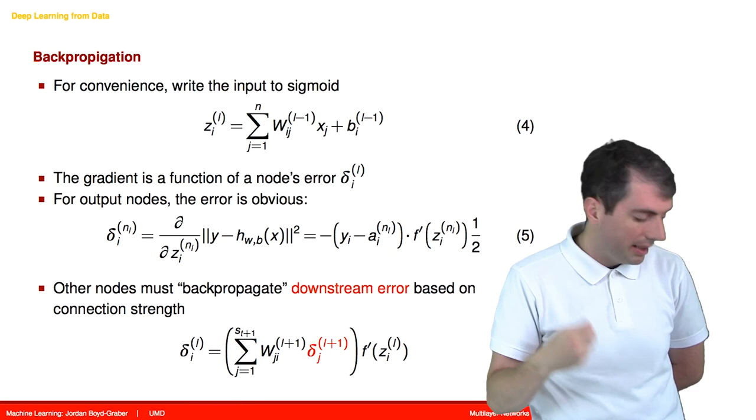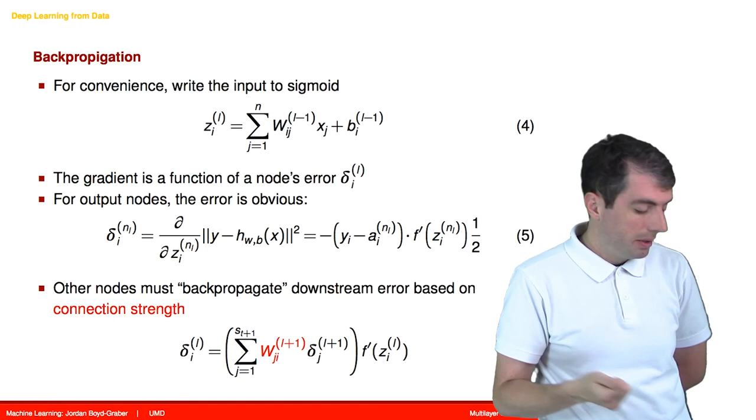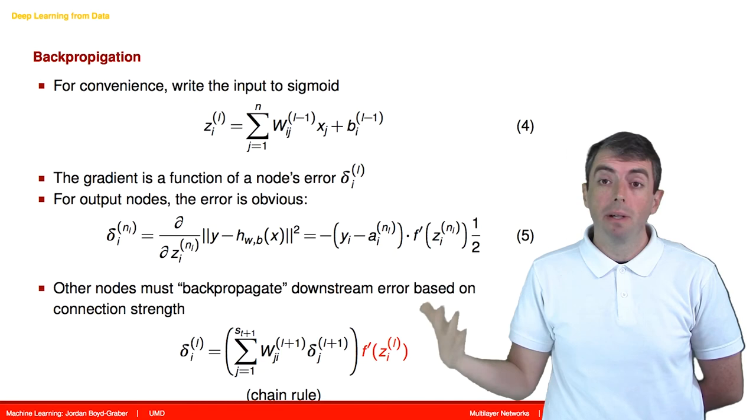The error of a downstream node in layer L+1 gets multiplied by the weight that fed into the downstream node decision, w_ji^(L+1). And because of calculus, that gets multiplied by the derivative of whatever activation function you're using.